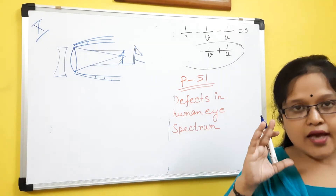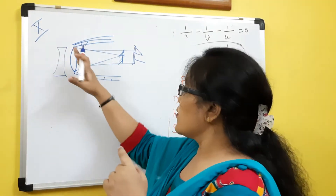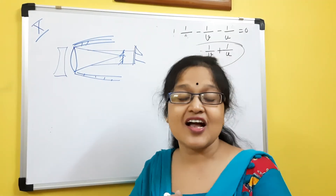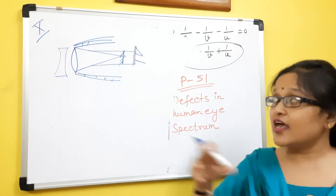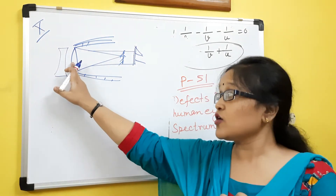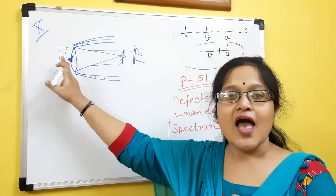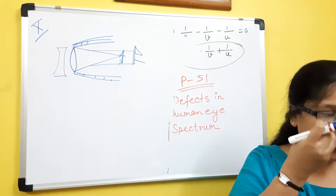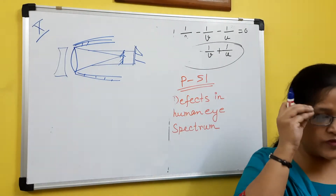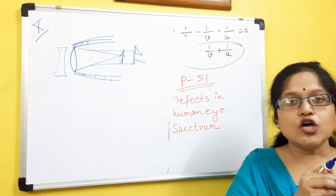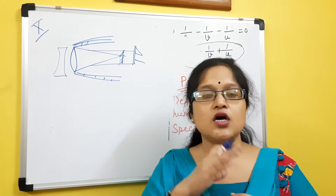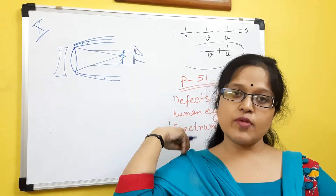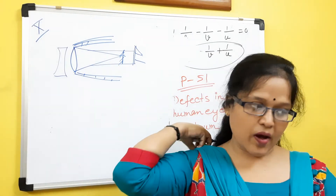Hypermetropia is forming the image behind the retina. To get clear vision, they are given a convex lens. One convex lens they already have, and another convex lens is added, so it makes the image form just on the retina. So: myopic patient means short-sightedness, minus power. Hypermetropia means long-sightedness, plus power.